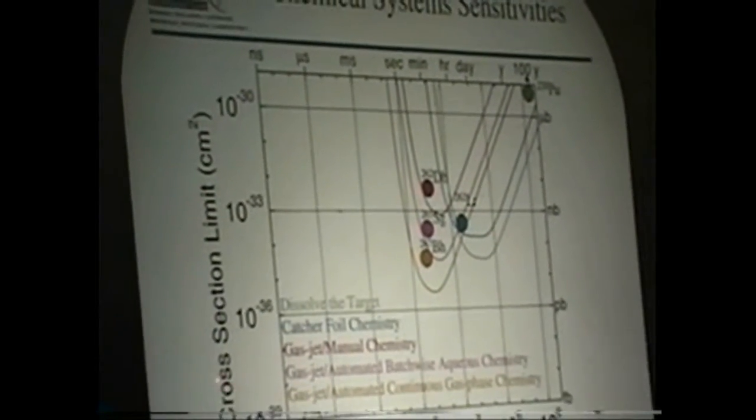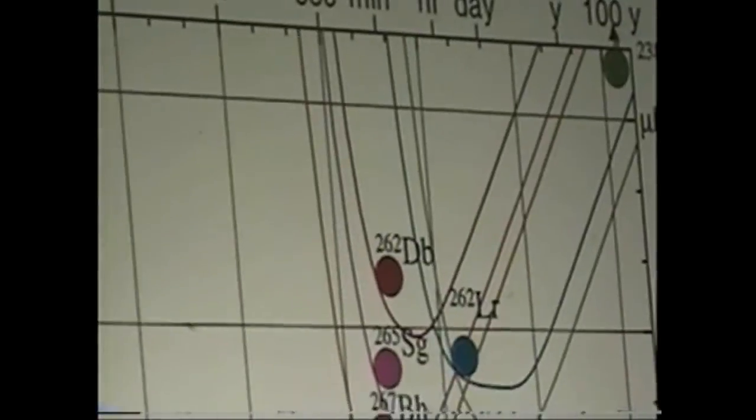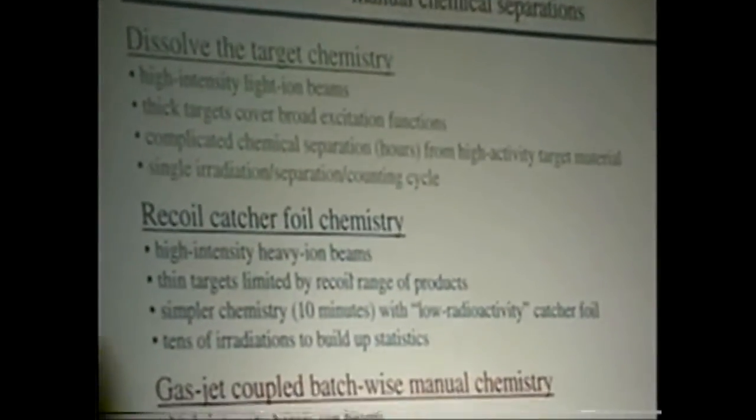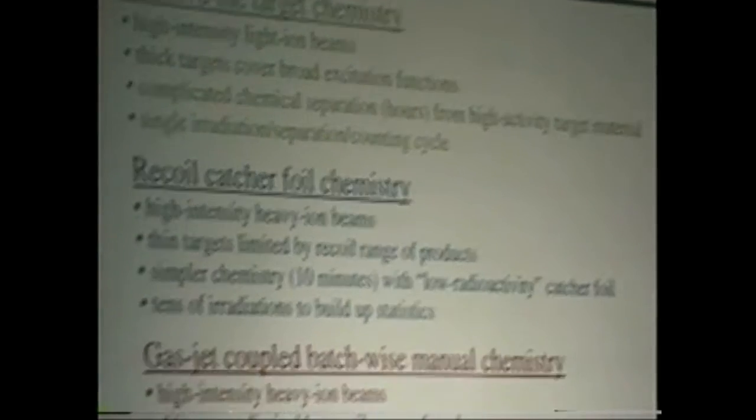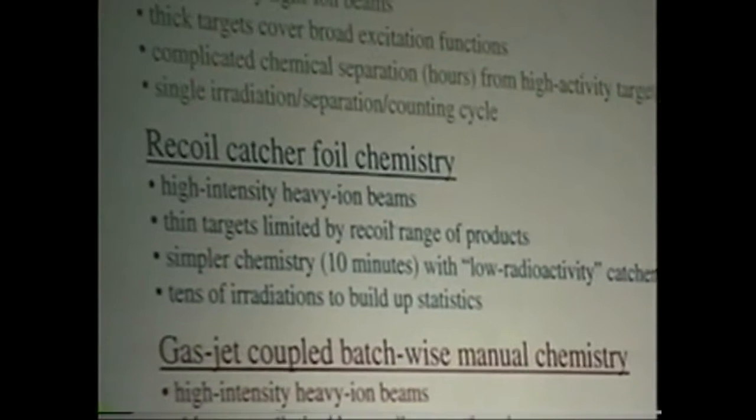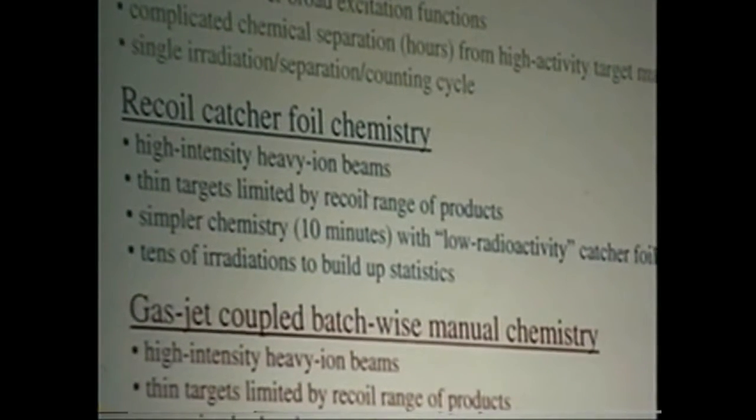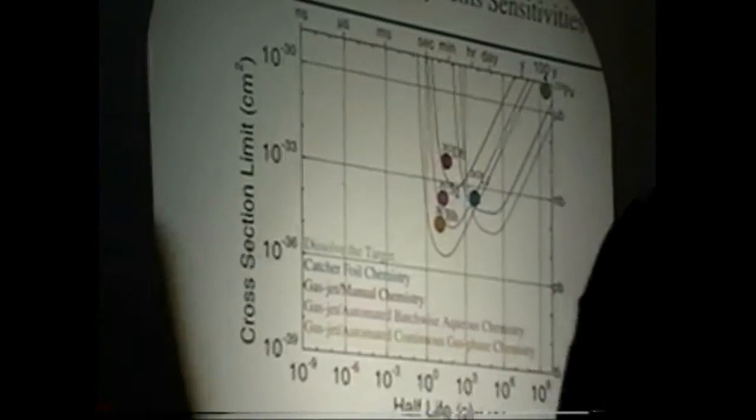The next curve I'd like to talk about is a blue curve. This is a recoil catcher foil technique. The idea there is you don't always want to have to dissolve the target. It's slow and gets complicated chemistry. Also, you can only use your targets once before you have to rebuild the target. An idea, I think from Al Giorso, is let's again take advantage of the momentum imparted to the compound nucleus in a nuclear reaction. Let it recoil out of a thin target into a catcher foil. At the end of an irradiation, we can remove the catcher foil and perform chemistry. Thin targets are limited by the recoil range of the products. You can do simpler chemistry because the catcher foil has lower radioactivity. Because you're not dissolving the target, you can do tens of irradiations to build up statistics.